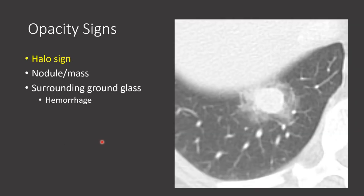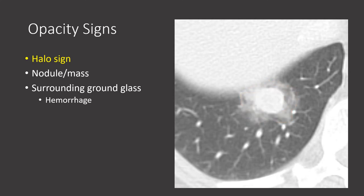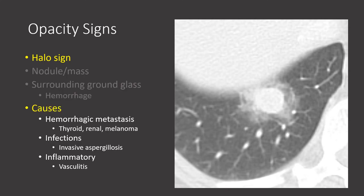Let's now talk about some signs we can see in the setting of opacities. A solid nodule with surrounding ground glass is described as a halo sign — an area of surrounding ground glass opacity that looks like a halo. Causes of the halo sign include metastatic disease from vascular tumors such as thyroid, renal cell carcinoma, and melanoma; infections, particularly invasive aspergillus in the setting of neutropenic fever; and inflammatory conditions such as vasculitides. This was an example of a hemorrhagic thyroid metastasis.